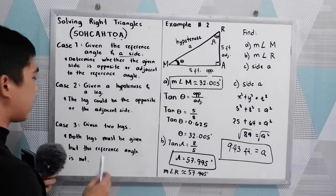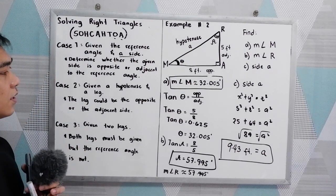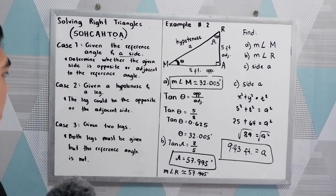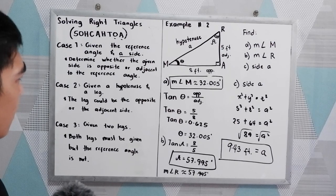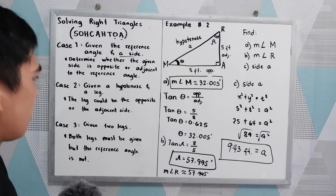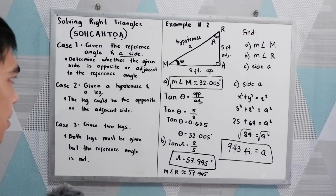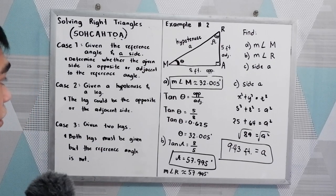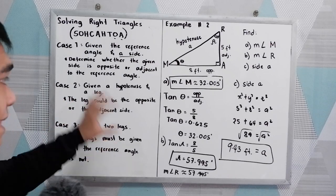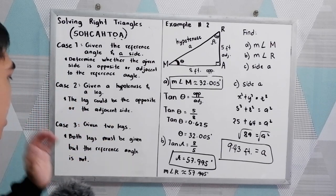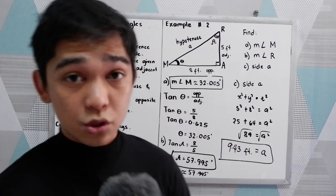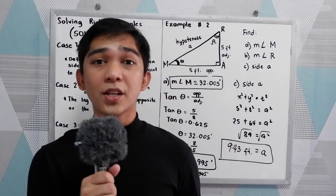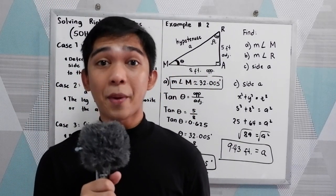Again, that falls under case number 3. So that's solving right triangles. If you have other examples or problems in your homework, they may fall under case one, two, or three — use our SOHCAHTOA. Thank you for watching Senior Pablo TV.